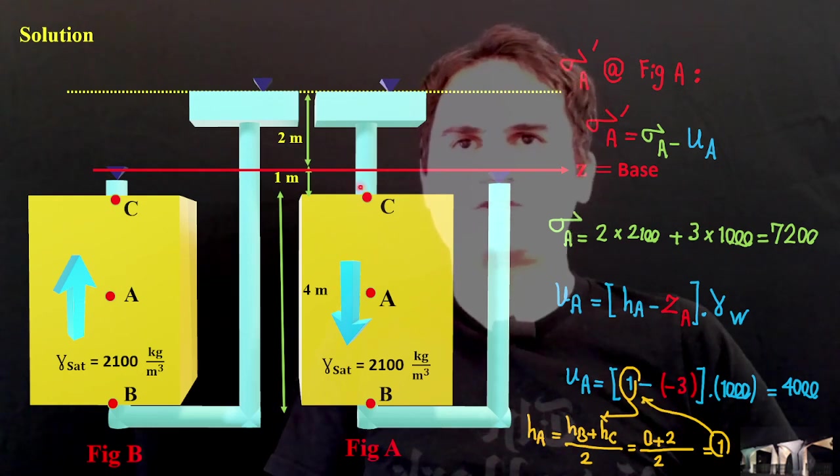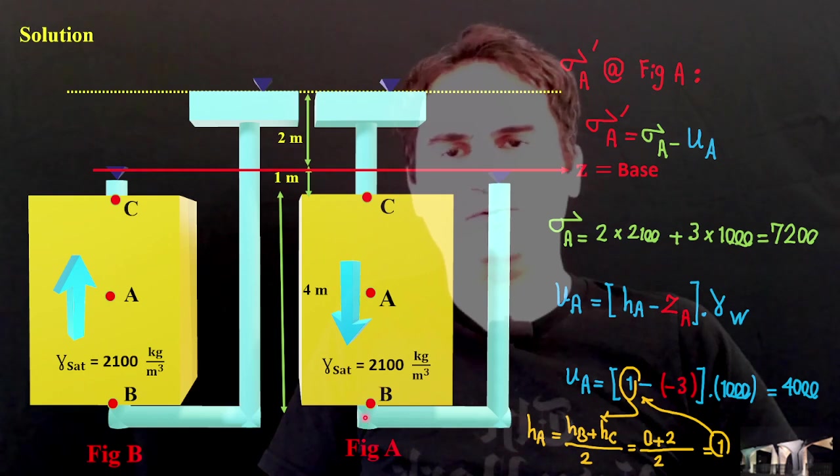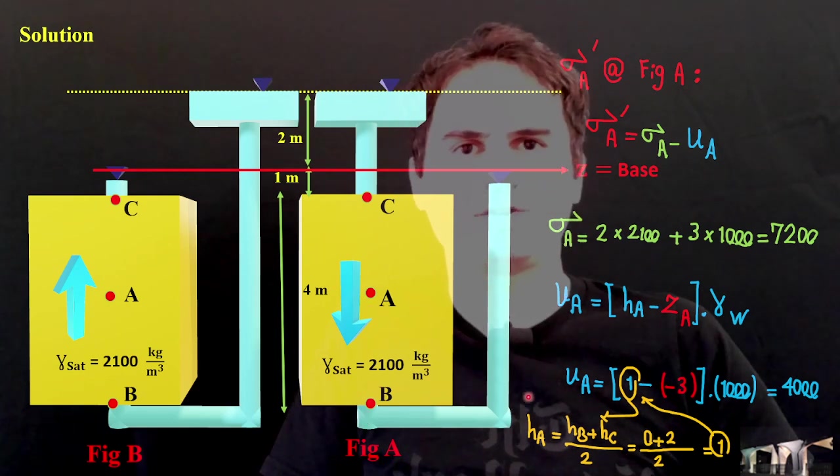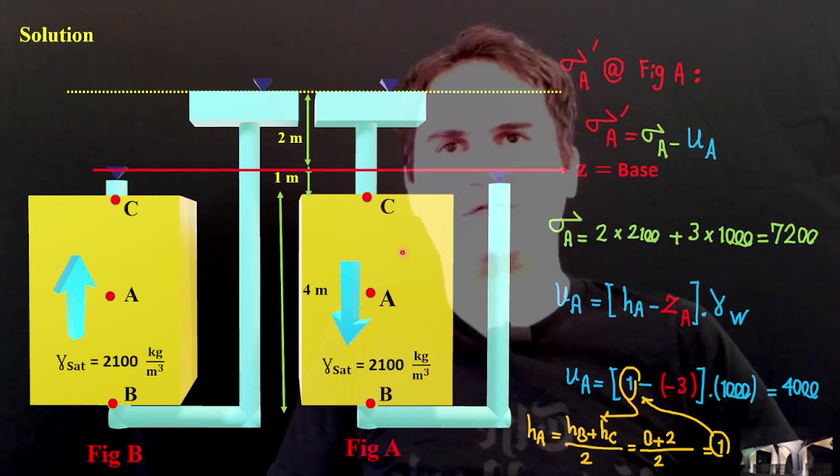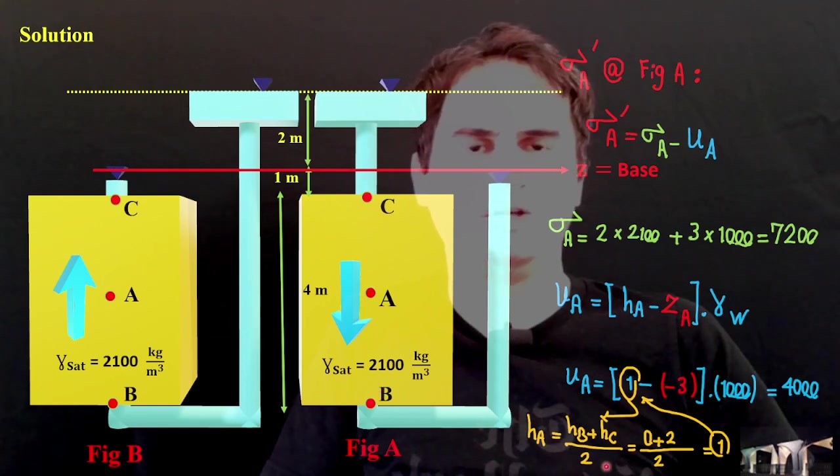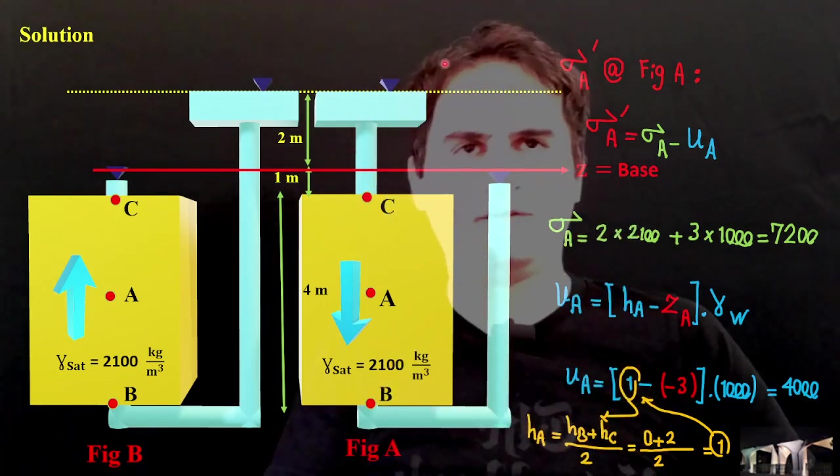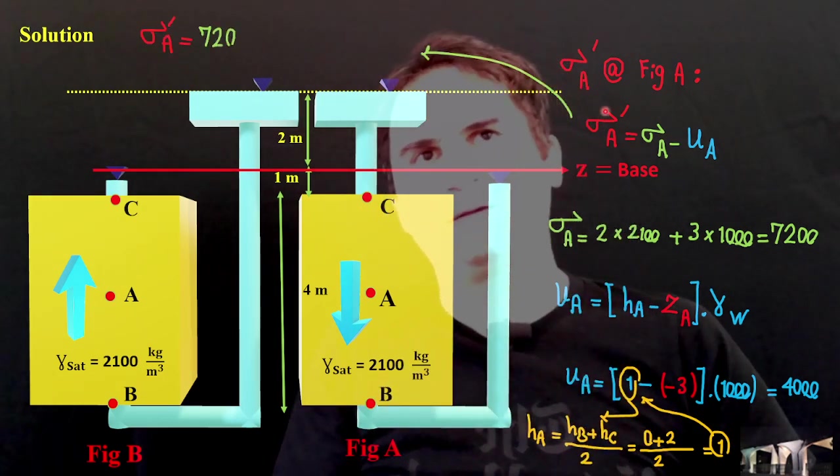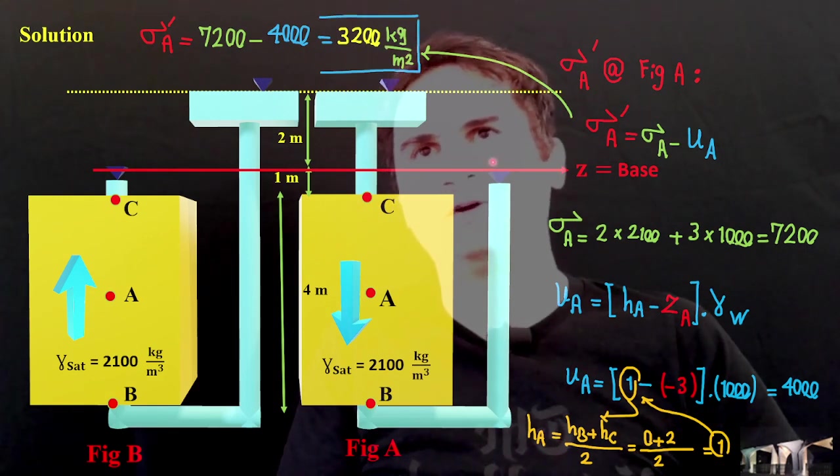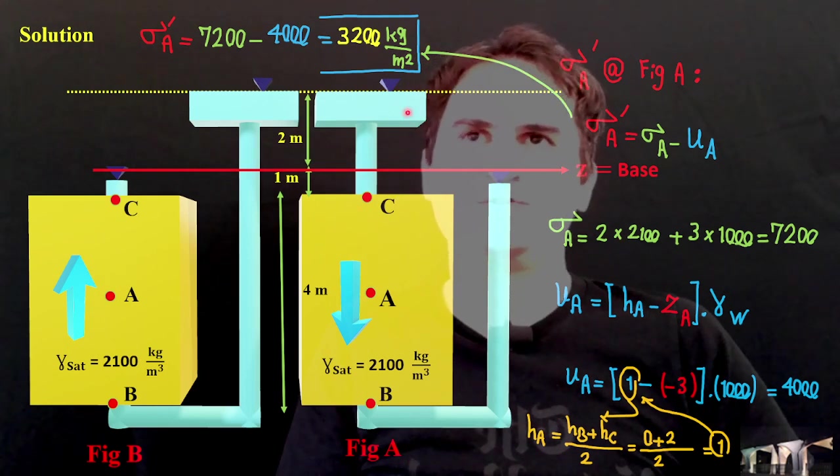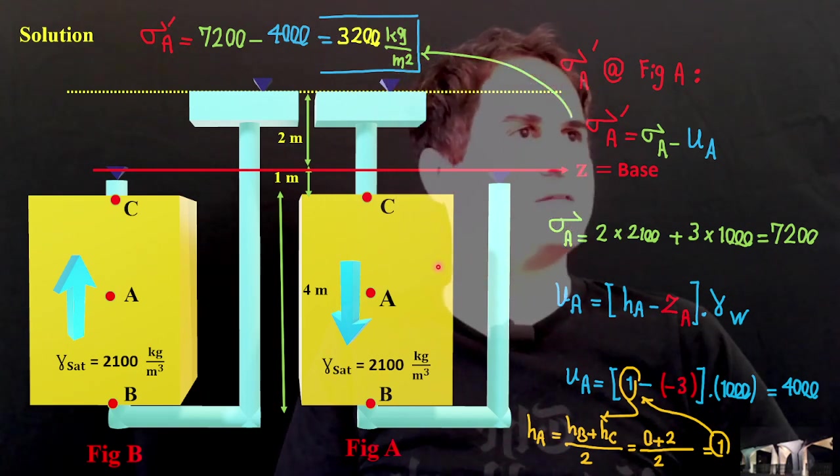And U_A is H_A minus Z_A times gamma W. If you replace H_A, 1 minus H of A is a negative 3, Z of A is negative 3 times gamma W. This gives us 4,000. You might ask how we can calculate this 1 here. We already calculated H_C and H_B in the earlier part of this video to get the direction, verify the seepage direction. H_A is somewhere at the center, so that's the average of H_C plus H_B over 2. That's 0 plus 2 over 2, and it just ends up to be 1. Let's back to sigma prime effective stress at point A halfway through. It's 7200, which is sigma A minus U_A, which is 4,000. It just gives us 3,200 kg over meter squared.